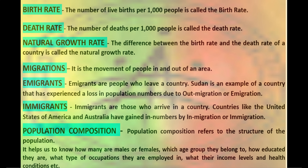The movement of people in and out of an area is referred to as migration, and migration also decides whether the population of a particular area will increase or decrease. Migration can be classified into two groups: emigrants and immigrants. Emigrants are people who leave a country — Sudan is a best example of a country that has experienced a loss in population due to out-migration. Immigrants are those who arrive in a country — the United States and Australia have gained in numbers through immigration. The general trend of international migration is from less developed nations to more developed nations in search of better employment opportunities. Within countries, large numbers of people may also move from rural to urban areas in search of employment, education and health facilities.